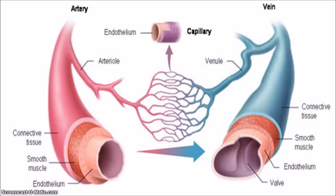Let's look at all three blood vessels as they're connected. The artery is highlighted in red, the capillary network is in the middle, and the vein is highlighted in blue. This color coding shows that red represents oxygenated blood and blue represents deoxygenated blood. Always remember that arteries generally carry oxygen-rich blood — with the exception of the pulmonary artery — and veins generally carry deoxygenated blood, except for the pulmonary vein.